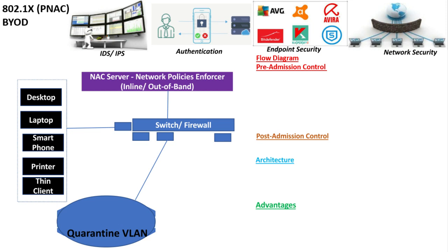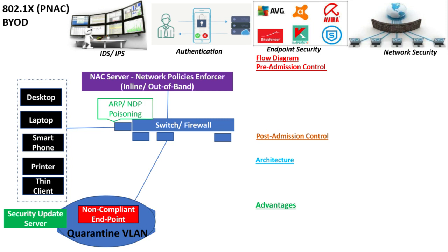This is our quarantine VLAN, to which unauthorized or non-compliant endpoints are first granted admission. All non-compliant endpoints are entered into this quarantine VLAN. There is also a security update server used to update the security configuration of non-compliant endpoints to make them compliant. Another mechanism is ARP or address resolution protocol and neighbor discovery protocol poisoning, used by network access control to prevent unauthorized or non-compliant device access. Similarly, there is a captive portal used for related purposes.